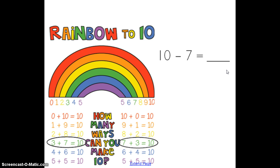So we have to find the missing number if these facts are related. So if I use this one, it has a 10. I've used that. It has a 7. I've used that. What number haven't I used? 3. So I know that 10 minus 7 equals 3.